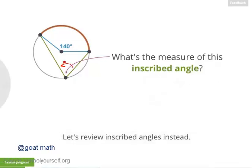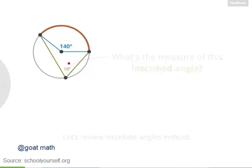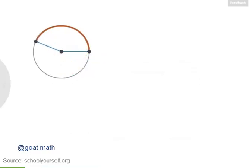So this inscribed angle is half of 140, or 70 degrees. Next, let's look at an arc that's slightly bigger.